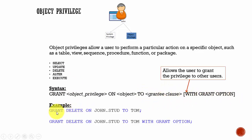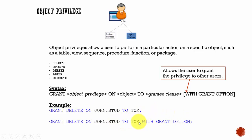For example, GRANT DELETE ON John.student TO Tom — Tom can delete rows in the student table belonging to John. And GRANT DELETE ON student TO Tom WITH GRANT OPTION means Tom can delete rows in the student table and also grant that delete privilege on the student table to other users. Make sure you don't give WITH GRANT OPTION unless it is really necessary.